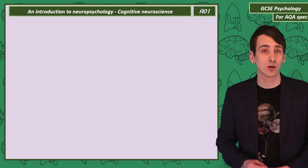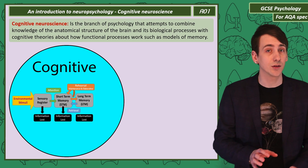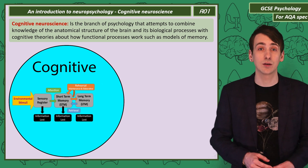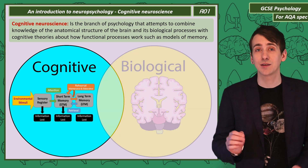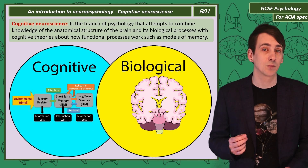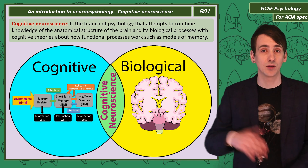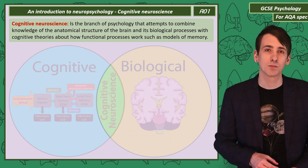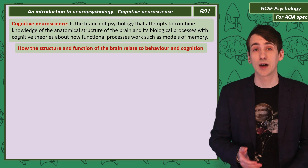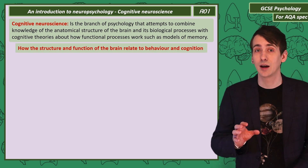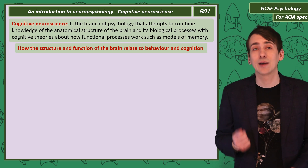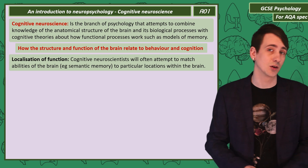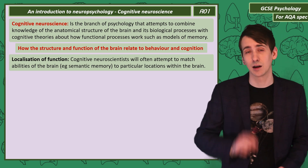Let's start by defining cognitive neuroscience. Cognitive psychologists create theories on how information is processed in the brain — in the memory unit we discuss the multi-store model of memory. Neuroscientists investigate the anatomical structures of the brain, so cognitive neuroscientists combine both of these fields, matching the physical structure of the brain with information processing functions. Fundamentally, cognitive neuroscientists explain how the structure and function of the brain is related to our behaviour and our cognition. An important aspect of this work is identifying the location of function — matching an ability to a particular location.